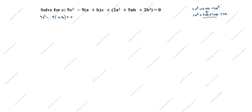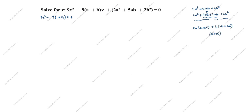So we have 2a² plus 4ab plus ab plus 2b². Now we take two terms at a time. From the first two: 2a is common, giving 2a(a+2b). From the last two: b is common, giving b(a+2b). You see here a+2b appears in both groups, so we take a+2b as common.